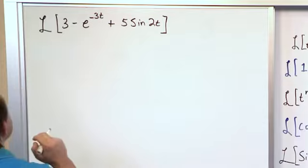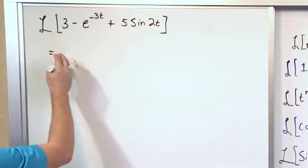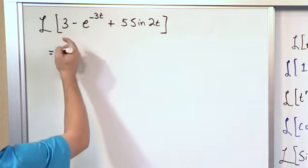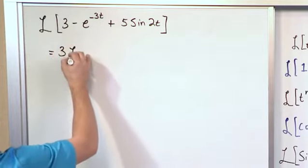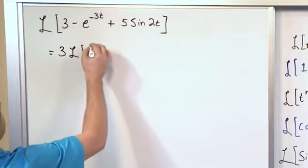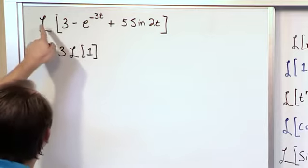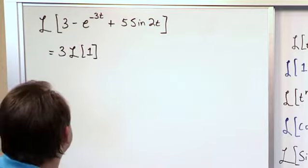To make it a little bit more clear before we start applying the actual transform rules, let's rewrite it. This is going to be basically 3 times the Laplace Transform of 1. Make sure you understand that because 3 times 1 is 3, so you can pull the 3 out and Laplace Transform what's left which is just 1.